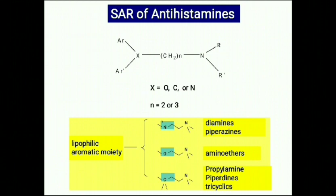The terminal amino group has alkyl groups attached to it. X could be oxygen, carbon, or nitrogen, and the spacer atom would have two to three carbons. The CH2N spacer is generally an ethyl group. If the X atom is nitrogen and you have an ethyl group along with the terminal nitrogen containing alkyl groups, then it falls into the class of diamines or piperazines.